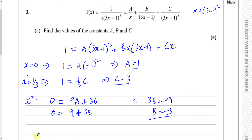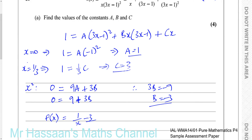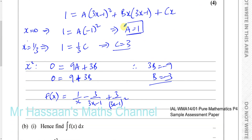So now we can write our function f of x as 1 over x, minus 3 over 3x minus 1, plus 3 over 3x minus 1 squared. That completes part A: A equals 1, B equals negative 3, and C equals 3. Writing this down also helps us for the next part.